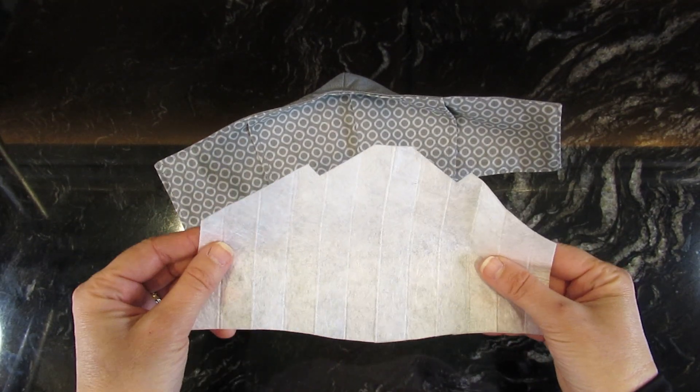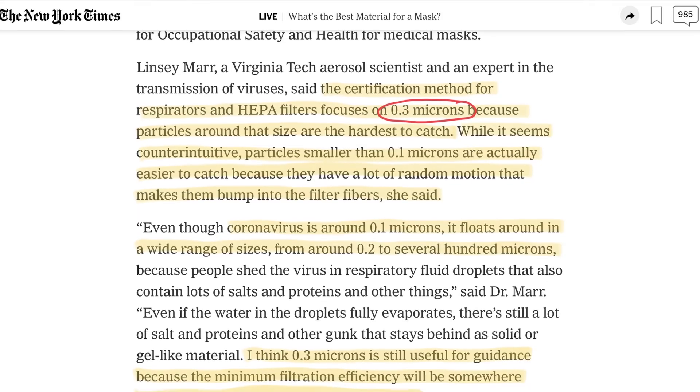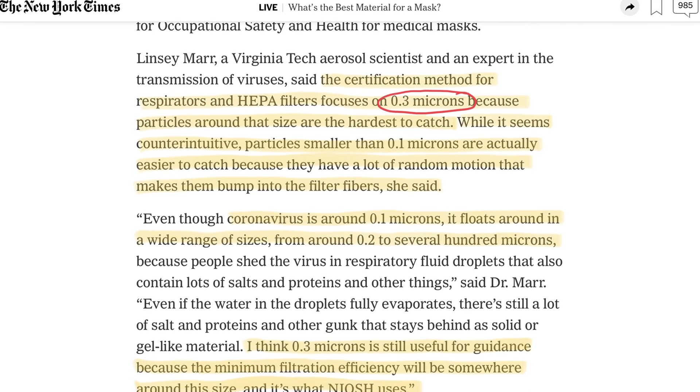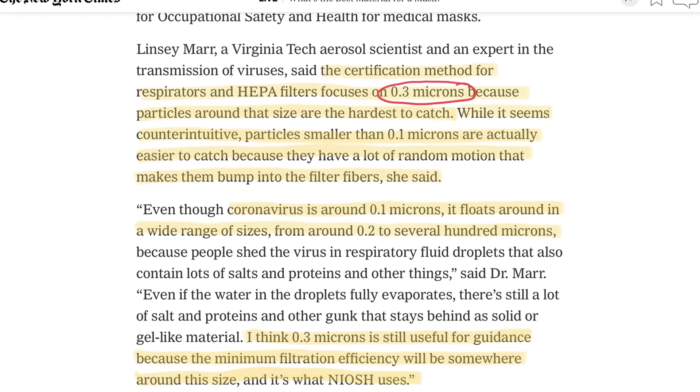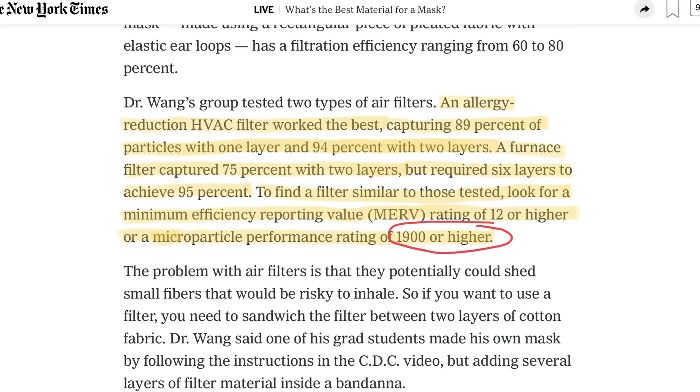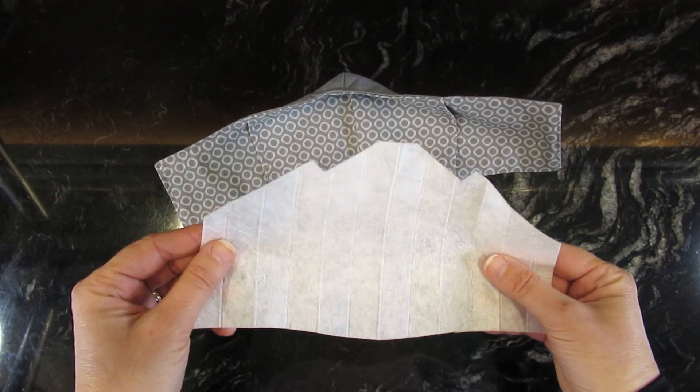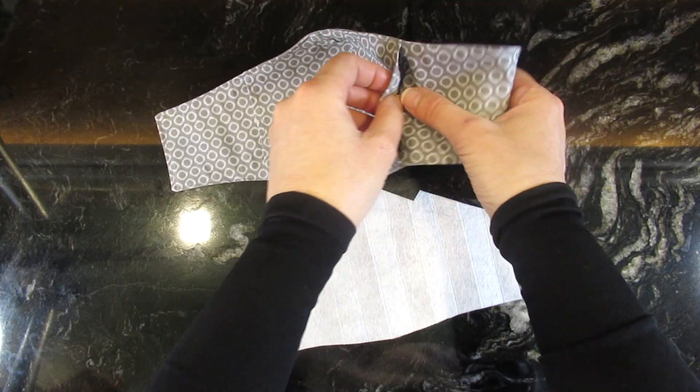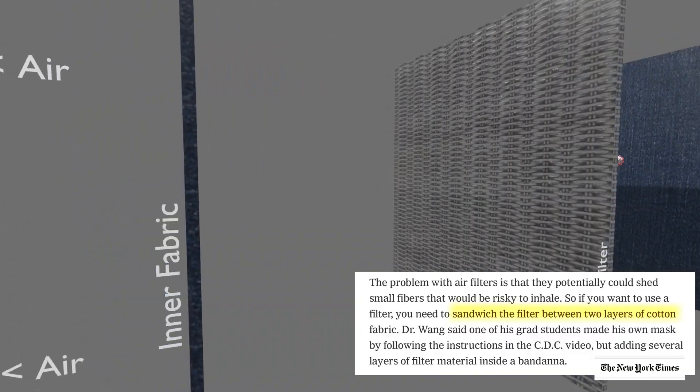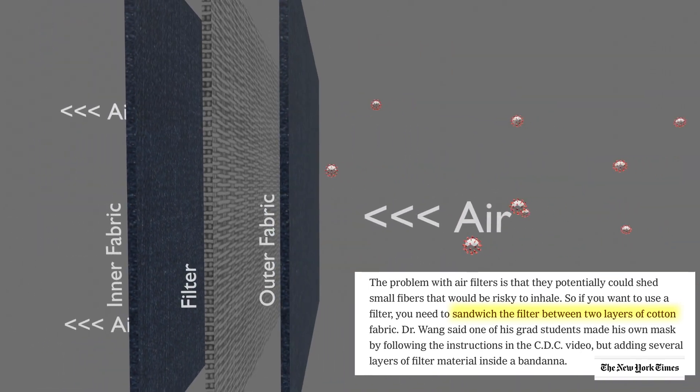As you can see, this New York Times article states that a rating of 0.3 microns and a micro particle performance rating of 1900 or more is best for this purpose. Notice that if you use this kind of filter, you should only use it sandwiched between two pieces of cotton fabric, such as in this Olsen mask pocket, to filter out any filter fibers that may be inhaled into your lungs.